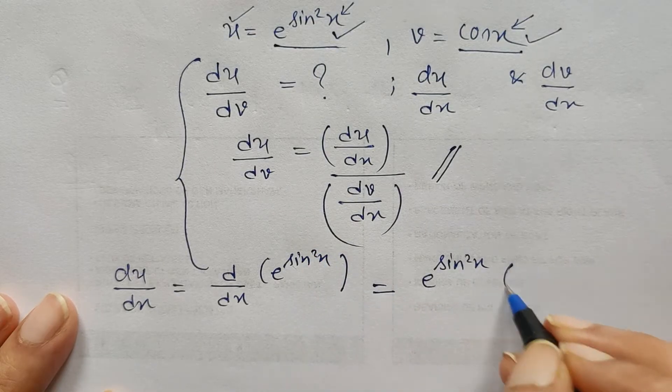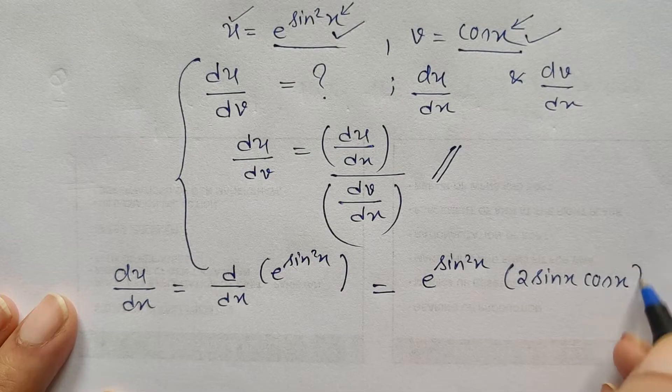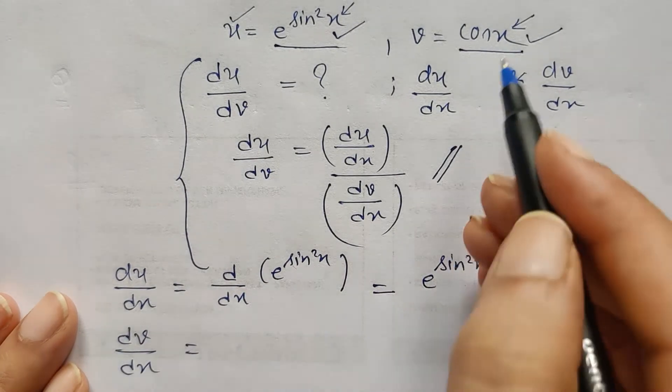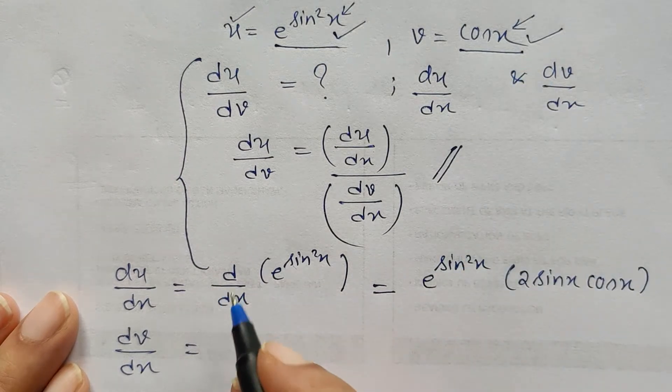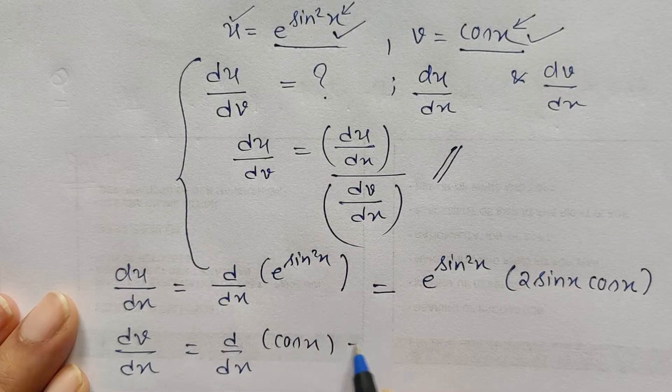Next is dv by dx. So here value of v is cos x. Derivative of cos x is minus sin x.